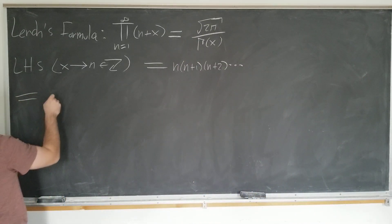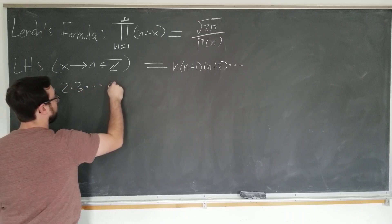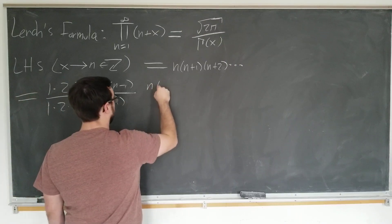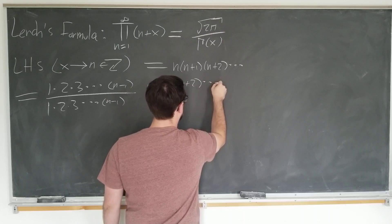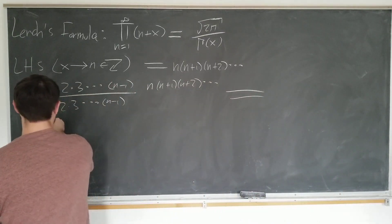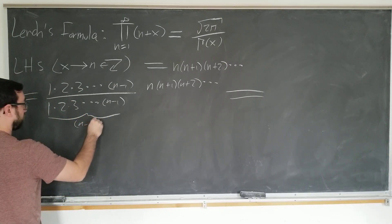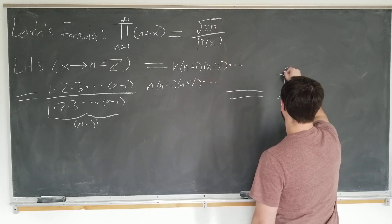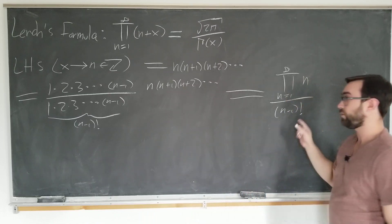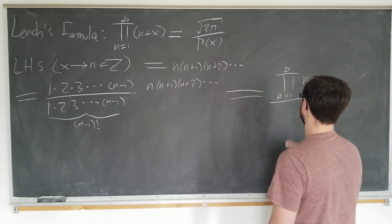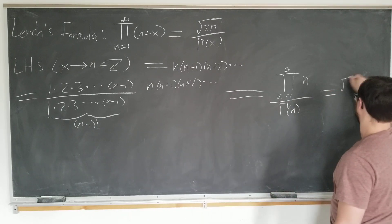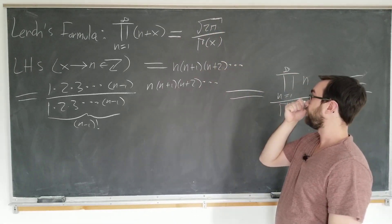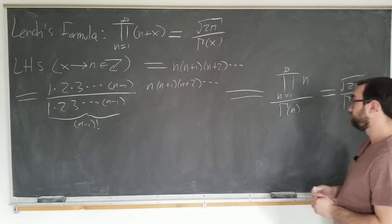This is the same as multiplying and dividing by 1 times 2 times 3 et cetera all the way to n minus 1. We recognize that what we divided by is just (n−1) factorial, and the numerator is the product of all the integers. Since (n−1) factorial equals gamma of n, the whole expression becomes the square root of 2π over gamma of n. So this formula actually makes sense.